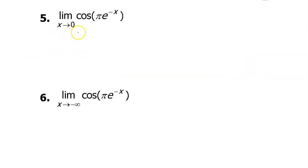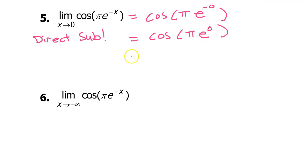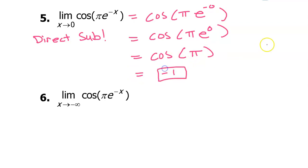Problem number five can be solved by direct substitution. Substituting zero for x, we get cosine of π times e to the negative zero power. The negative zero power is just the zero power, and anything to the zero power is one. So this is cosine of π, which equals negative one — because π on the unit circle has an x-value of negative one. That's your limit.